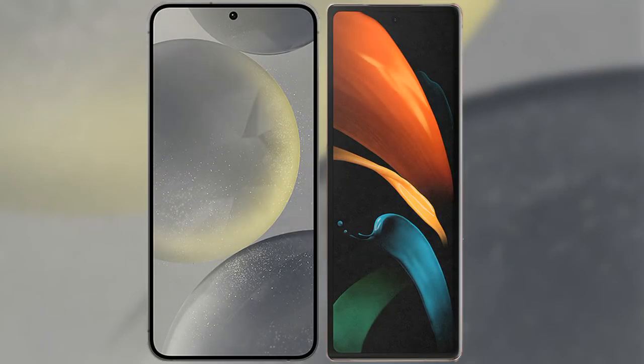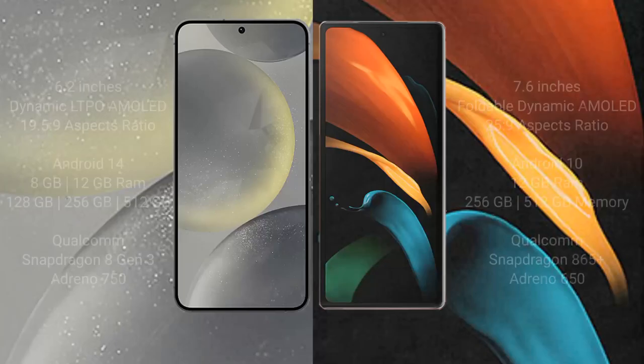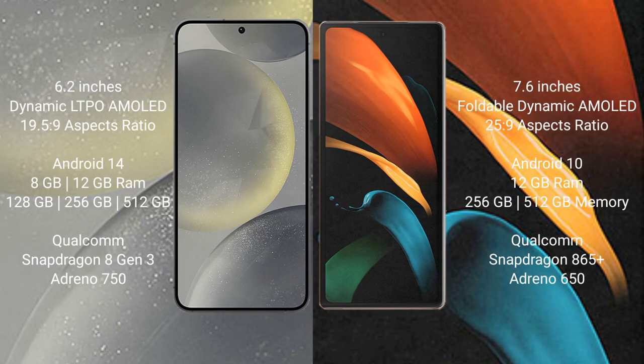I will compare the new Samsung Galaxy S24 with Samsung Galaxy Z Fold 2. Samsung Galaxy S24 comes with a 6.2-inch Dynamic AMOLED display and aspect ratio 19.5:9. Samsung Galaxy Z Fold 2 has a 7.6-inch foldable Dynamic AMOLED display and aspect ratio 25.9:9.